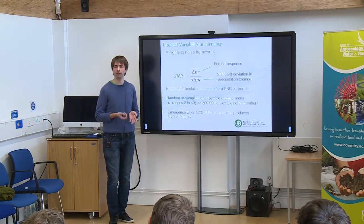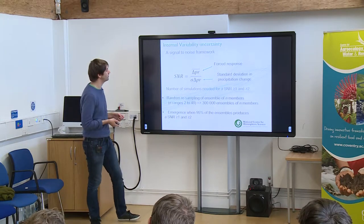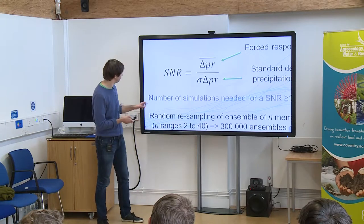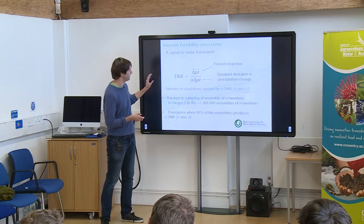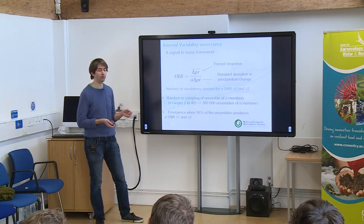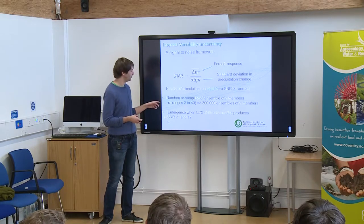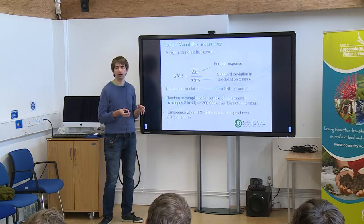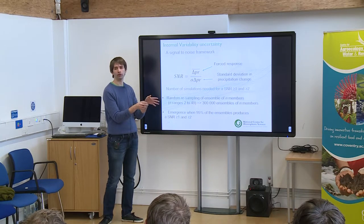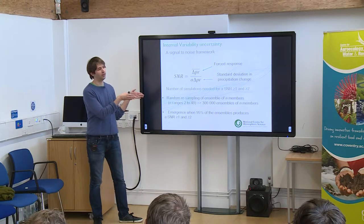I also wanted to know how many members are needed to obtain a robust signal over the Sahel. To do so, I used a signal-to-noise framework, where the signal-to-noise ratio is the ratio between the forced response — the average of the 40 members — divided by the standard deviation of the 40 projections. I targeted a signal-to-noise ratio greater than one or greater than two. To define how many members are needed, I resampled the data to create ensembles of two, three, or four members, randomly picking from the 40 members and repeating this a large number of times.